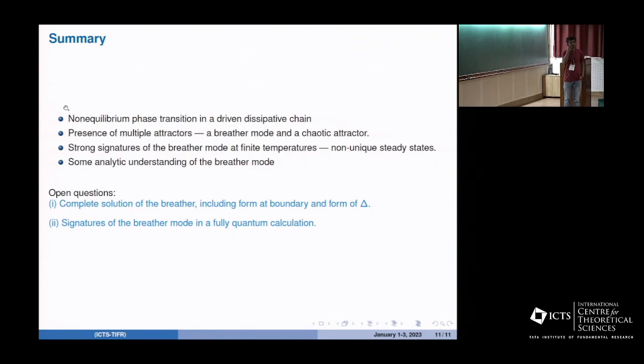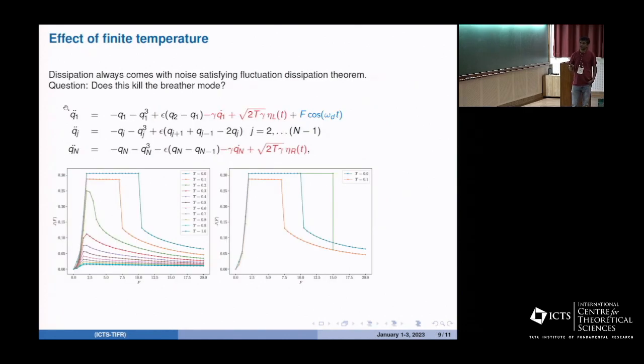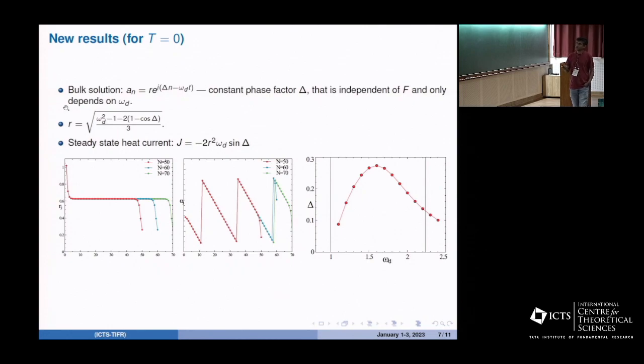Now we are open for questions. In this intermediate regime, what sets the value of the current of that plateau? The current depends on the amplitude of the oscillators, which we have an expression for. We have an analytic expression - the only thing we don't know is this dependence of the phase. It doesn't depend on the force, but it has a dependence on the driving frequency which we don't know how to estimate.